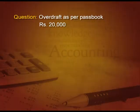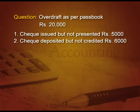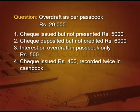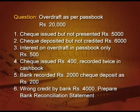The question starts with overdraft as per pass book 20,000. Point 1: check issued but not presented, 5,000. Point 2: check deposited but not credited, 6,000. Point 3: interest on overdraft in pass book only, 500. Point 4: check issued 400, recorded twice in the cash book. Point 5: bank recorded a 2,000 check deposited as 200. And last, wrong credit by the bank, 4,000. We have to prepare a bank reconciliation statement.